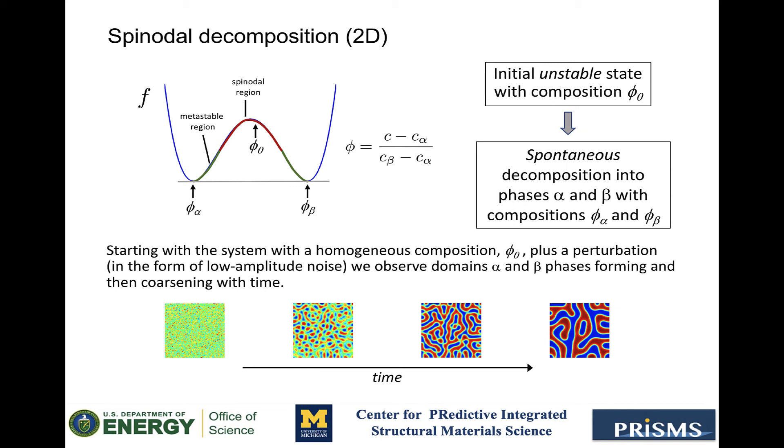In order to observe this in a phase field simulation, we need to start from a homogeneous phase and then add a small perturbation in the form of noise. What we typically see is the evolution of the system shown in the bottom sequence of images, where the blue and red domains have compositions phi-alpha and phi-beta respectively.